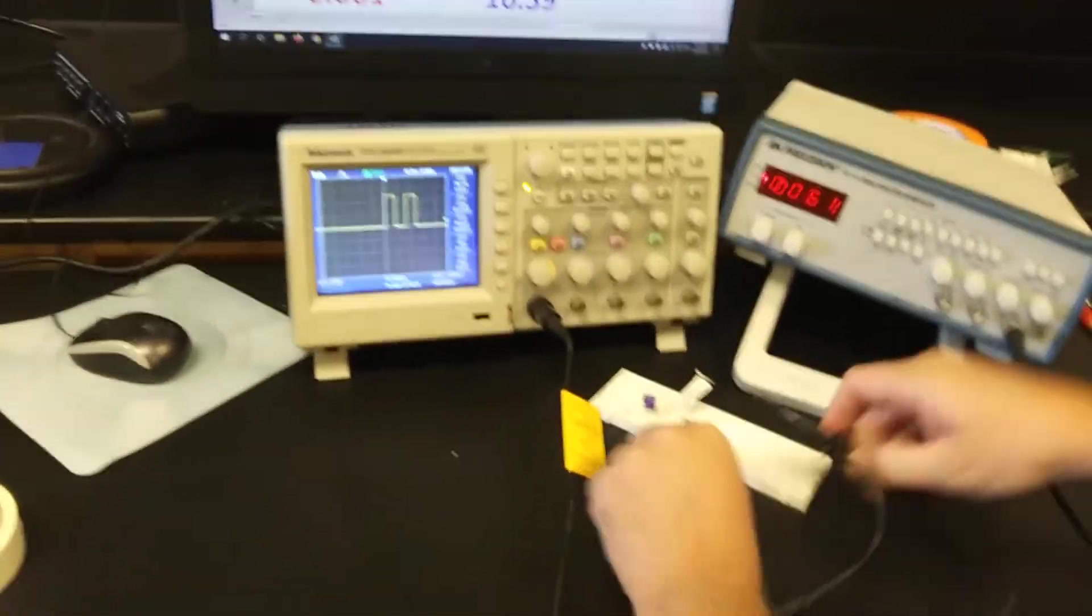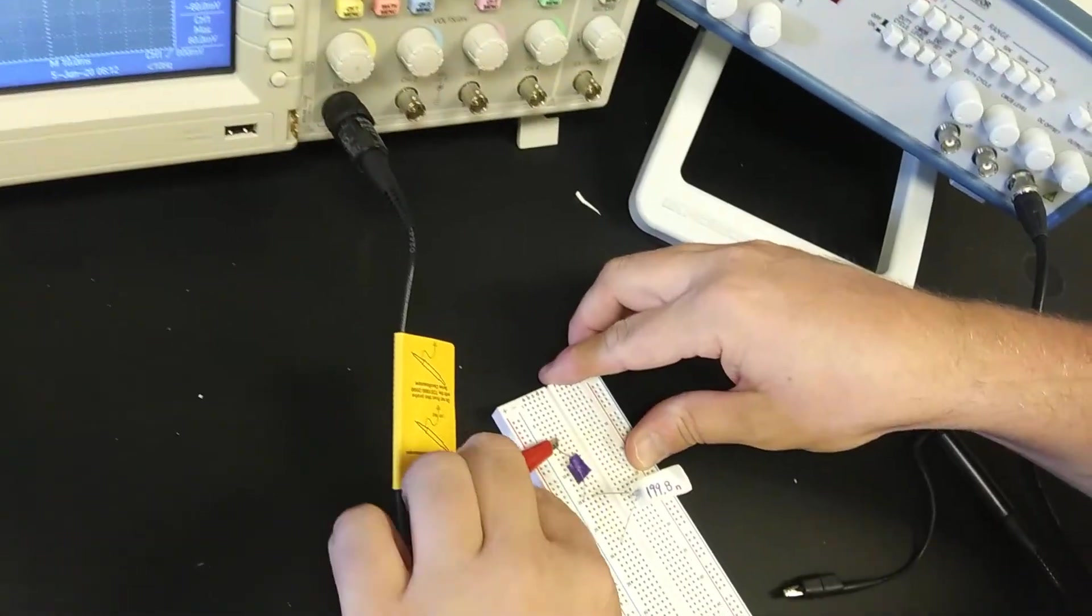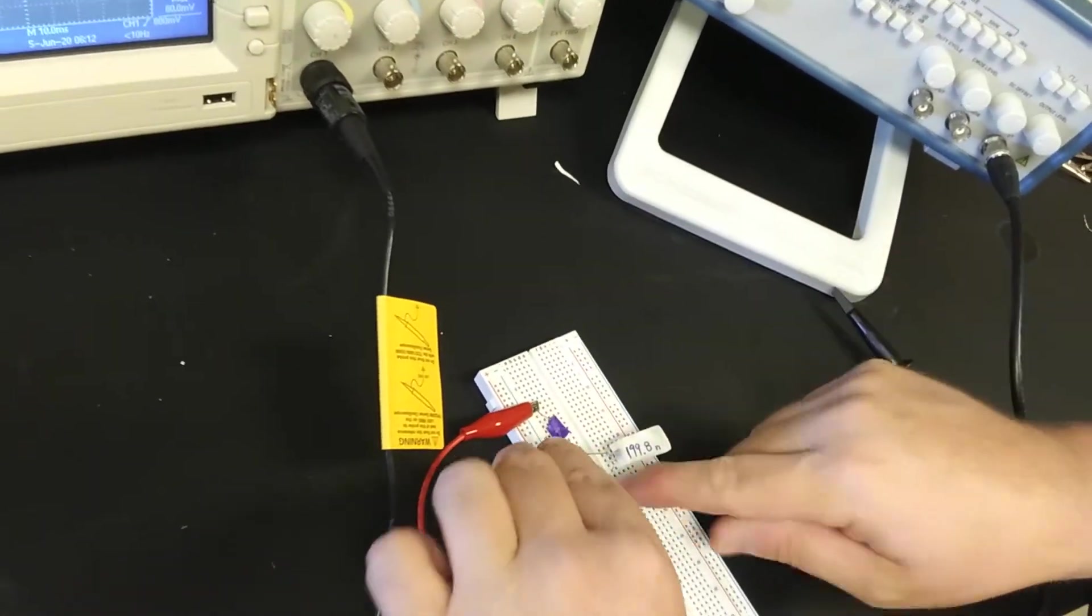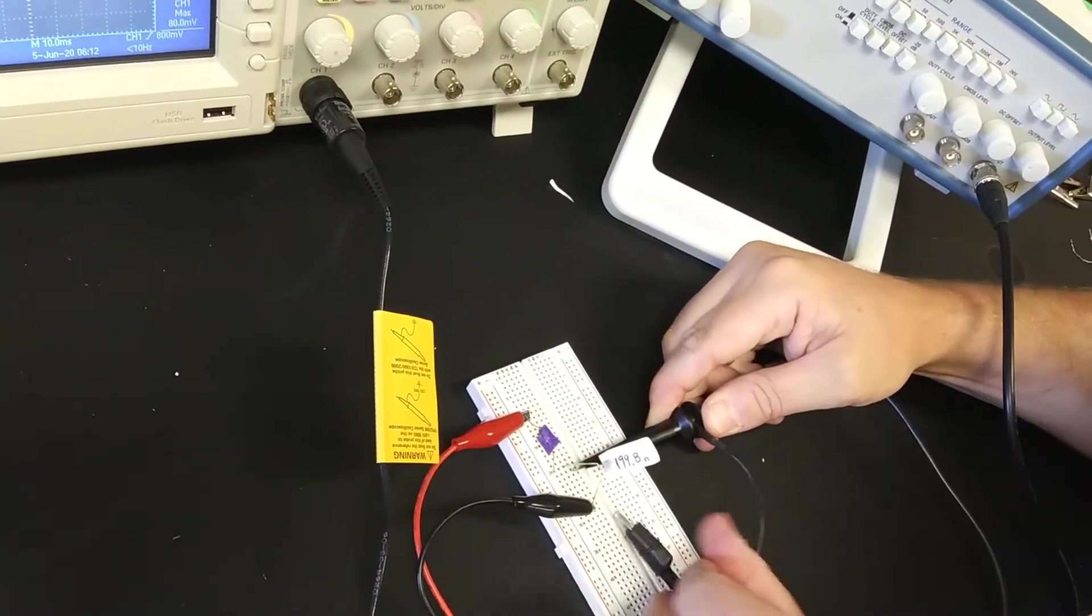So trying to set this up. Here's the function generator. So this is like the positive lead of the function generator and this is the ground of the function generator. And now what I'm going to do is I'm going to measure the voltage across this capacitor.